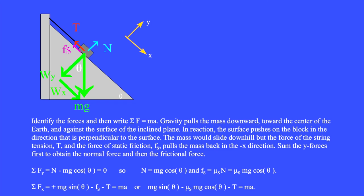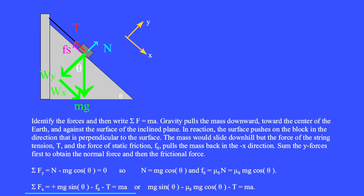The portion of the weight along the y axis is minus mg cosine theta and the x portion of the weight is plus mg sine theta. The sum of the y forces is N minus mg cosine theta equals zero, so the normal force N equals mg cosine theta and the static frictional force Fs always equals mu s times N, which here equals mu s times mg cosine theta. The sum of the x forces is mg sine theta minus the static frictional force minus the tension T equals mass times acceleration. Substituting the static frictional force, we have mg sine theta minus mu s times mg cosine theta minus T equals ma. Again, the mass does not cancel.